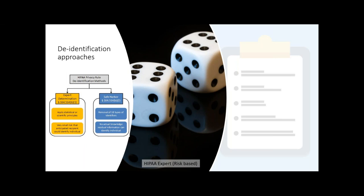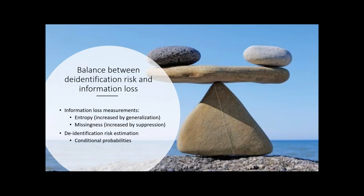Starting with the expert or risk-based approach: you always need to keep in mind there will always be a balance between re-identification risk and information loss. In practice, it's impossible to reduce re-identification risk to zero if you want to have something useful for analysis. Information loss can be measured with metrics like entropy — increased by generalization — and missingness, which is the percentage of missing data points in the final de-identified dataset, increased by suppression.